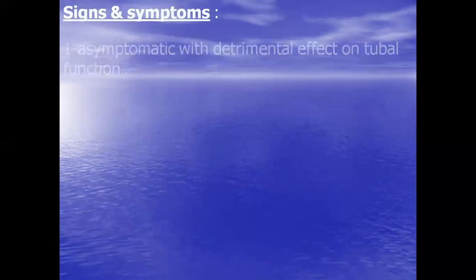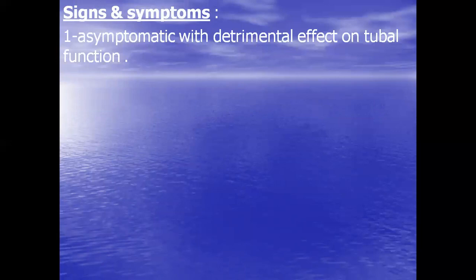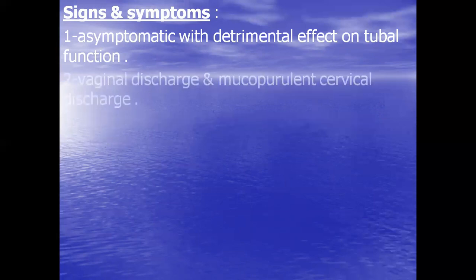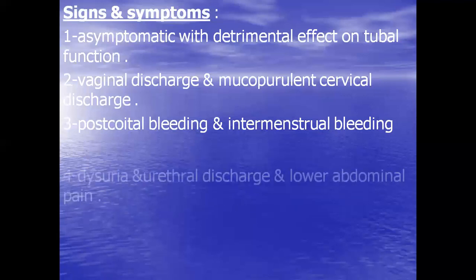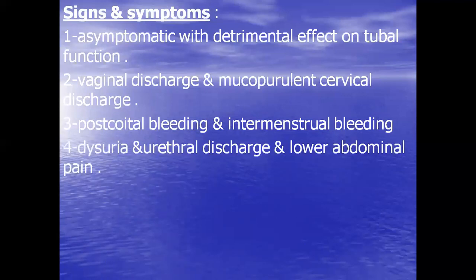Signs and symptoms of chlamydia: the patient may be asymptomatic with terminal effects on tubular function — for example, completely blocked fallopian tubes. Other presentations include vaginal discharge, mucopurulent cervical discharge (very specific to chlamydia), post-coital bleeding, intermenstrual bleeding, dysuria, urethral discharge, and lower abdominal pain.